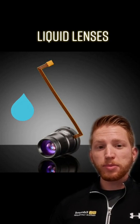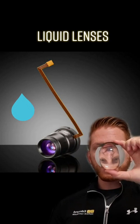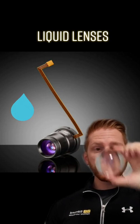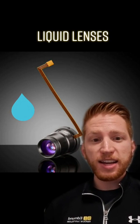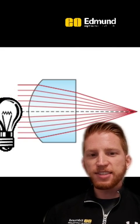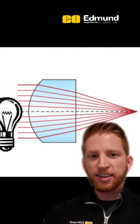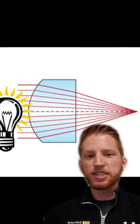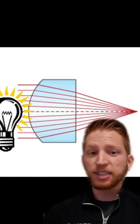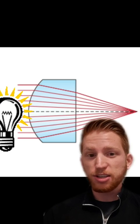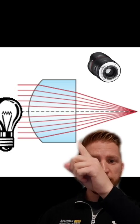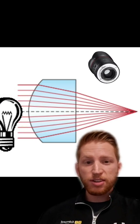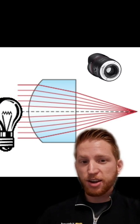When you think of a lens, you probably think of things like this made out of glass or plastic. But some lenses are actually made out of liquid. Lenses focus or spread out light, and all you really need for a lens is a curved shape of a material that's transparent to the type of light you're trying to use. The amount that a lens bends the light is dependent on the shape of its curve and the material it's made out of.